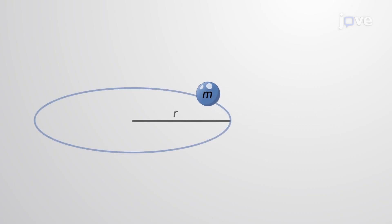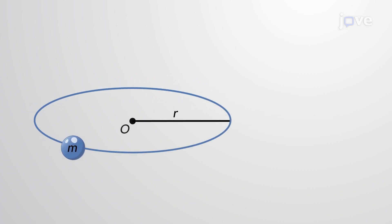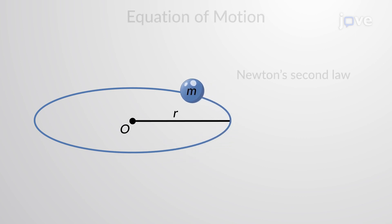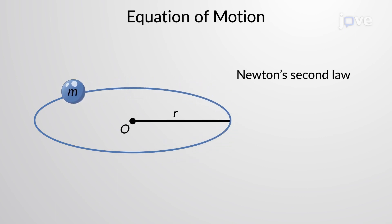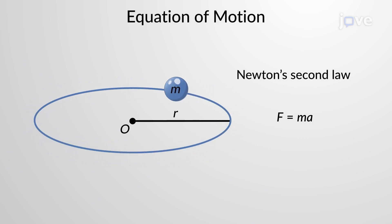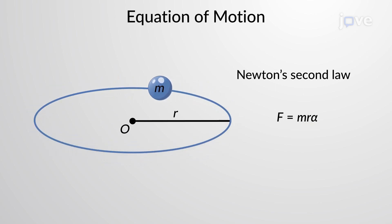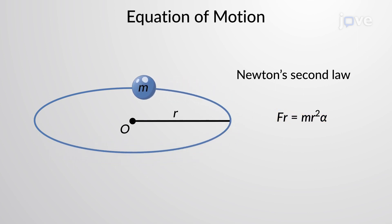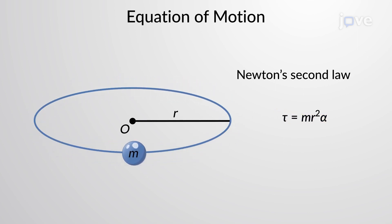Consider a point mass performing a circular motion about the center of rotation. Newton's second law of motion gives the force acting on this point mass. The linear acceleration can be written in terms of the angular acceleration, and multiplying both sides with the radius of the circular path gives an expression for the torque.